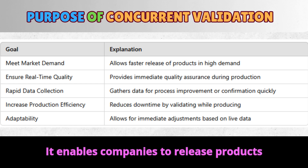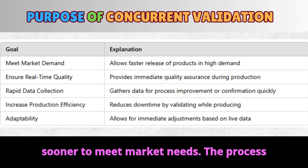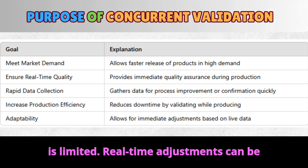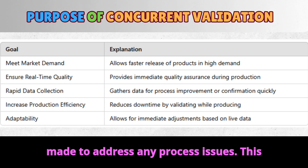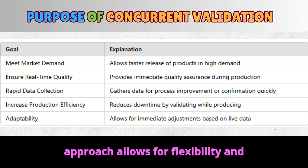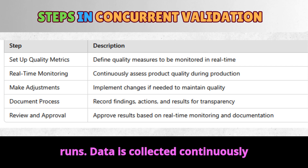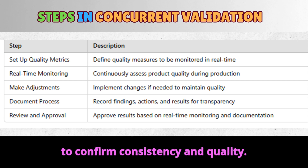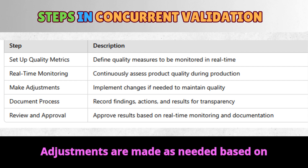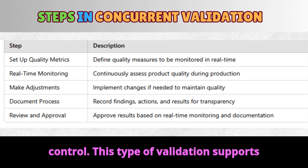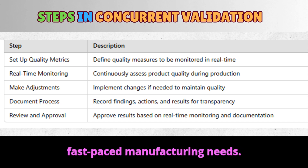Purpose of concurrent validation. Concurrent validation ensures product quality during live production. It enables companies to release products sooner to meet market needs. The process is ideal for urgent products where data is limited. Real-time adjustments can be made to address any process issues. This approach allows for flexibility and immediate quality control. It begins with monitoring quality metrics as production runs, and data is collected continuously to confirm consistency and quality. Adjustments are made as needed based on real-time results, with all changes documented to ensure transparency and control.